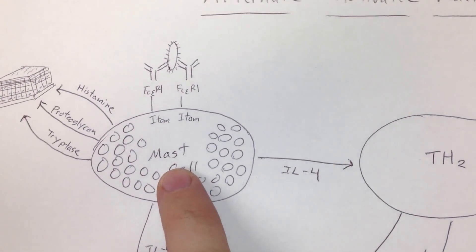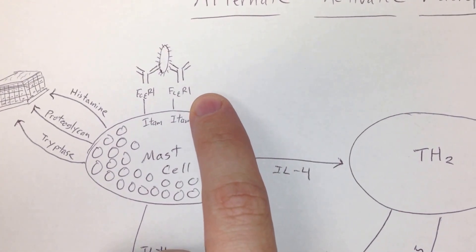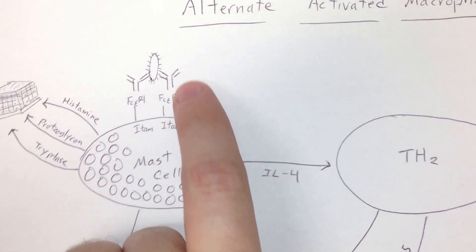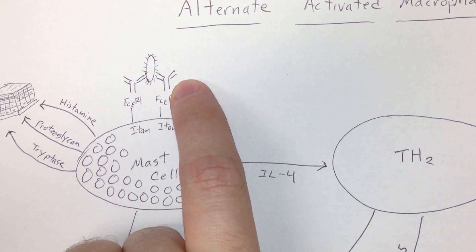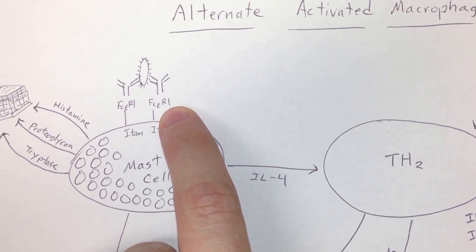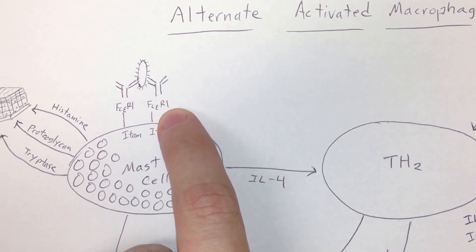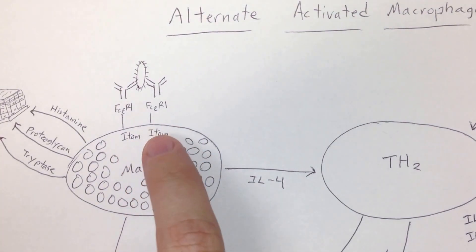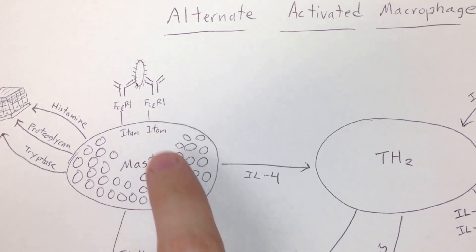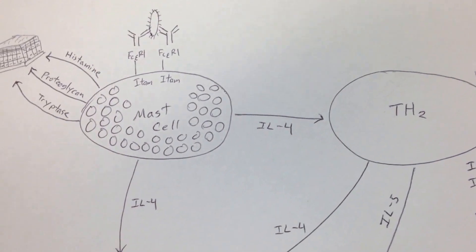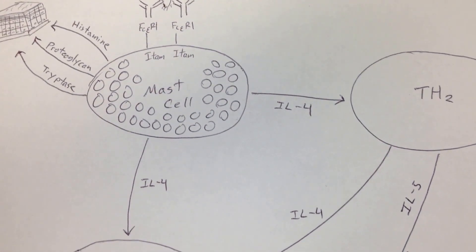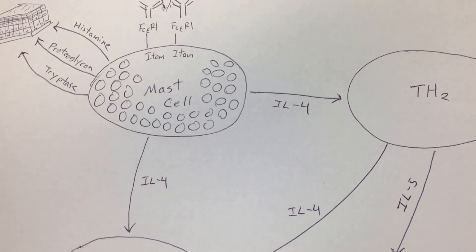Up here on the top of the mast cell, you can see that it has Fc epsilon R1 receptors. This bacteria here has some IgE bound to it, and so the Fc epsilon R1 receptor picked it up. There are ITAMs inside on the inside of these Fc epsilon 1, and when that's activated it tells the mast cell to release its histamine. When it releases its histamine, it also releases IL-4.